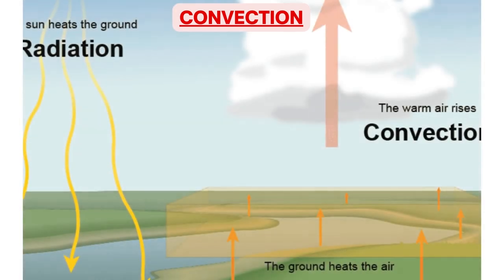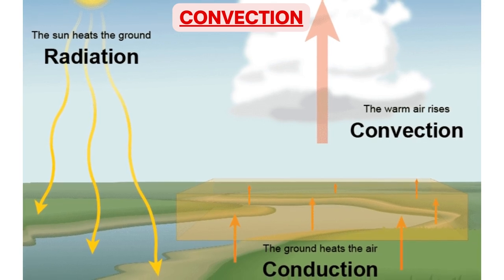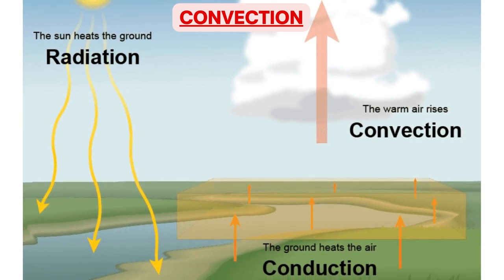Next is convection. Convection heating or cooling is when a parcel of material physically moves from one place to another and transfers heat. Air near the earth's surface gets heated by conduction, and due to heating its density reduces — it becomes lighter and therefore rises upwards to a higher height in the atmosphere, transferring heat to the surroundings. This process is called convection.